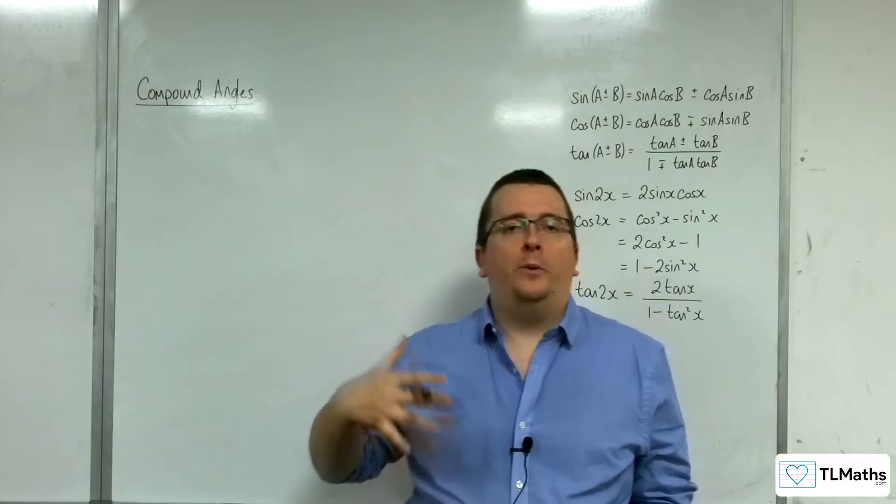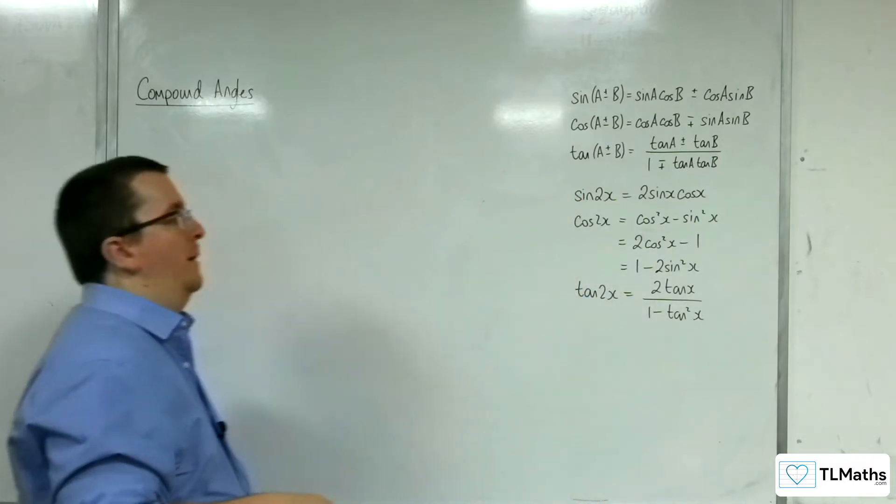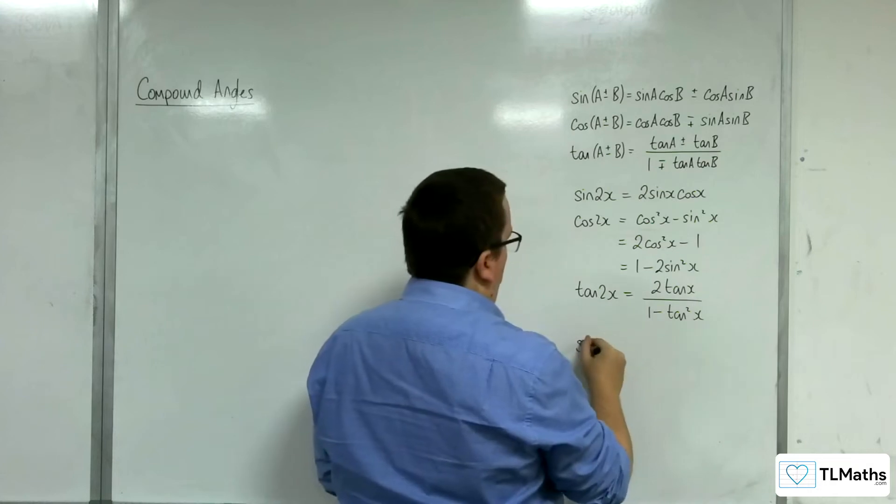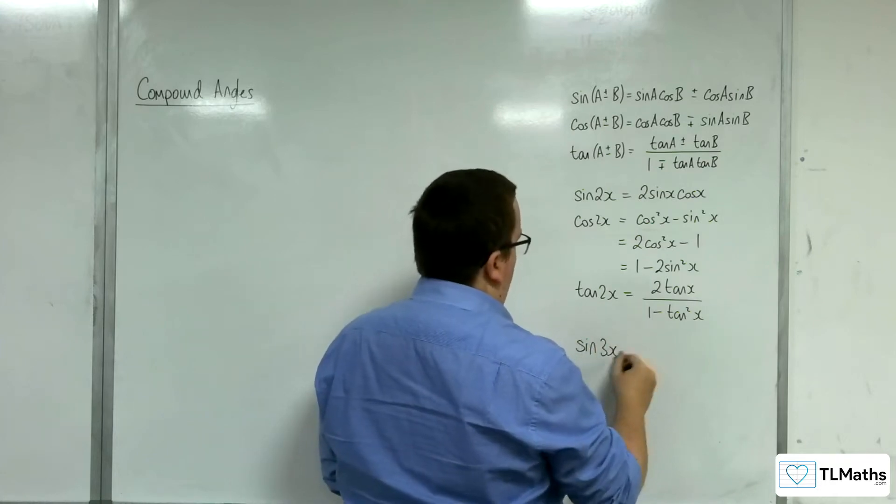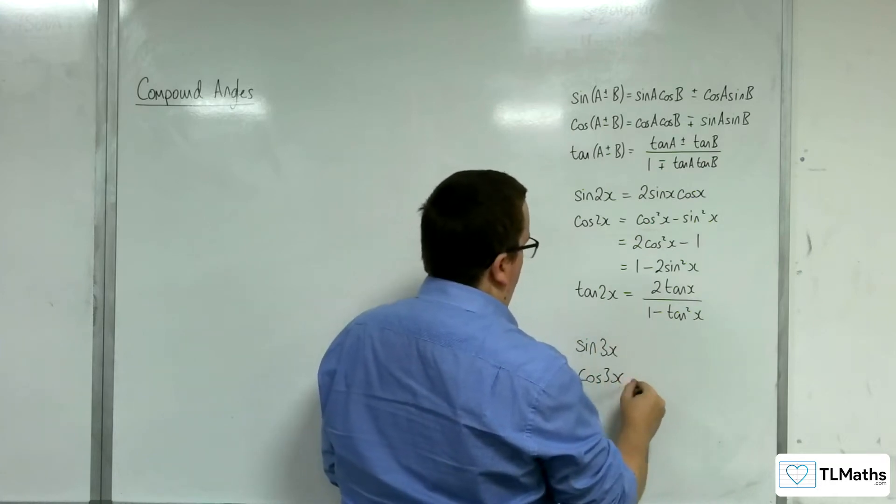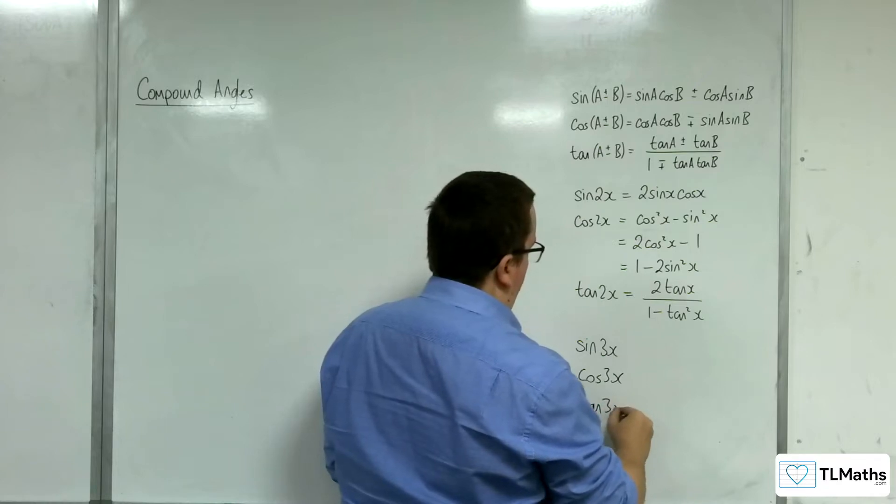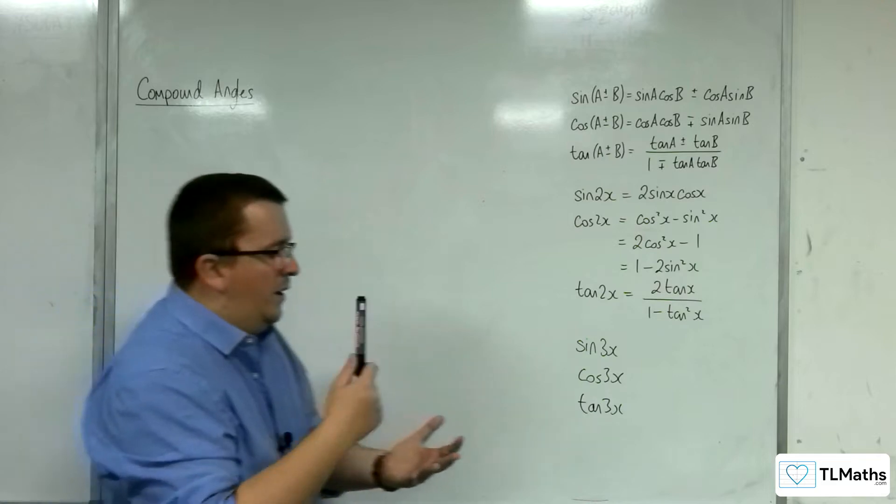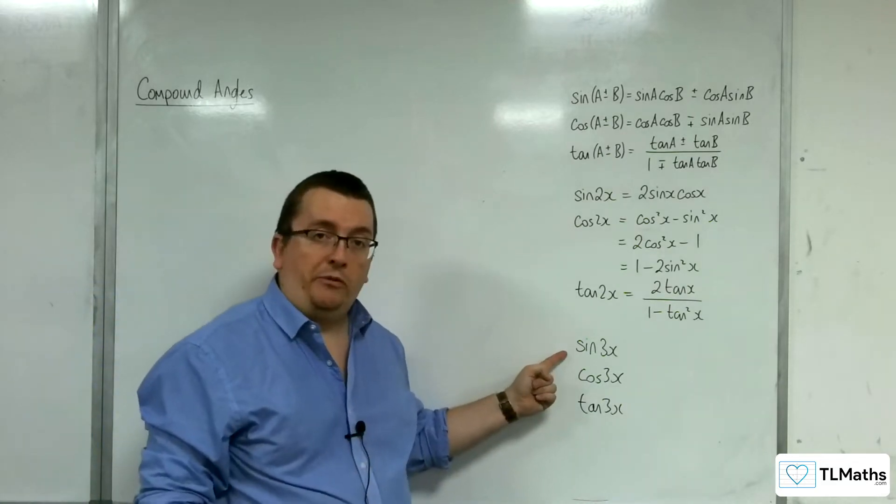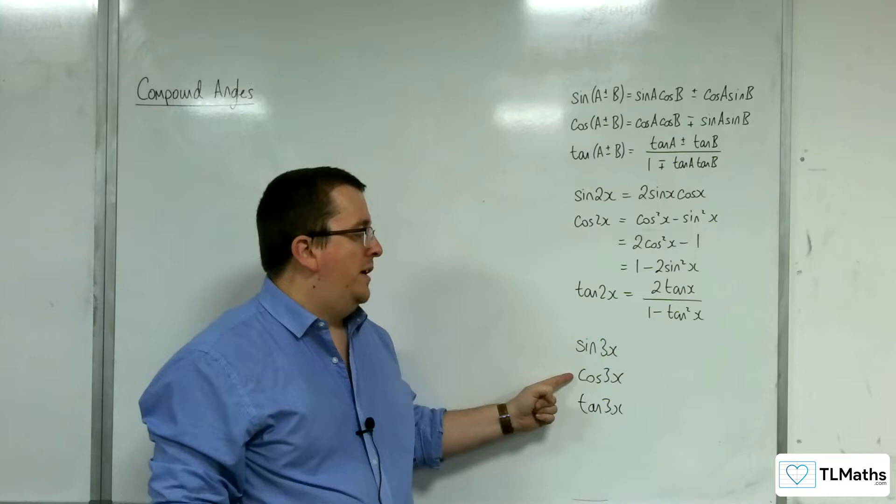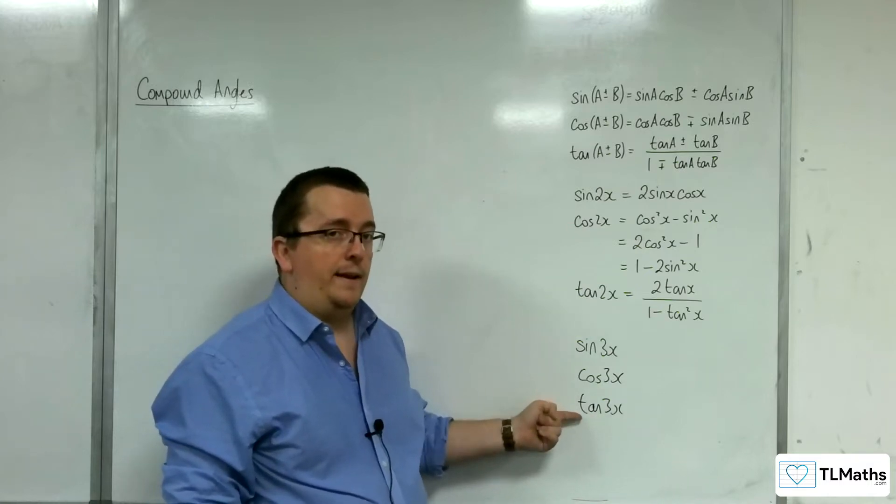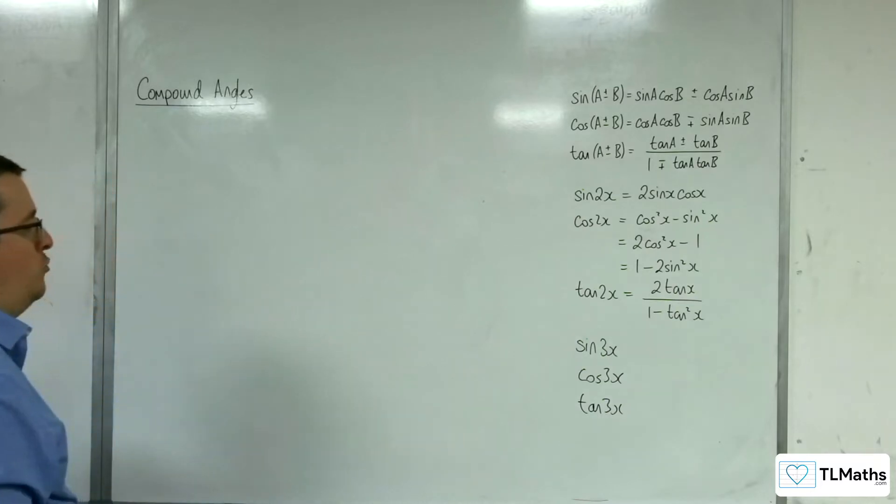So this is an extension video to explore the triple angle formula. We've got the double angle formula here. So the triple angles are involved with sine 3x, cosine 3x, and tan 3x. Now, the idea is to get sine 3x just in terms of sine x, cosine 3x just in terms of cosine x, and tan 3x just in terms of tan x. So that's what we're going to try and do.